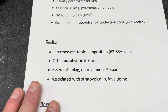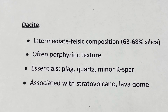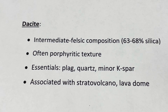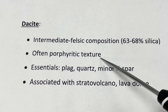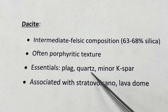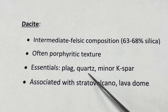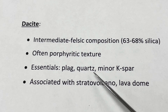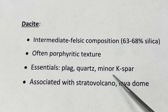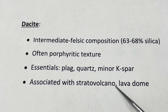The next rock type is dacite. Dacite is in between intermediate and felsic in composition — it's the extrusive equivalent of granodiorite. It has a little more silica than andesite and is also often porphyritic. The essential minerals include plagioclase, just like andesite, but dacite will have more quartz. That's the most important distinguishing feature: if I can see quartz — maybe around 20% — and perhaps some K-feldspar, that bumps me into the dacite category.